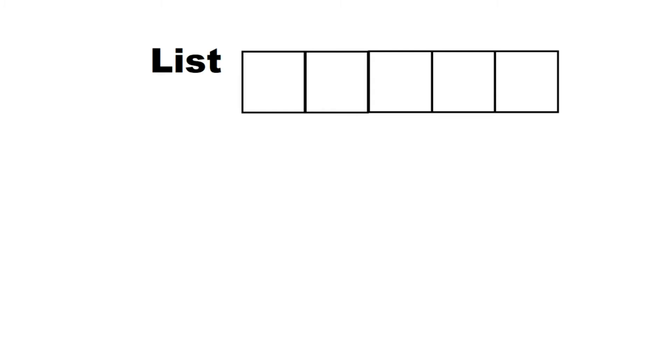This is a list. Each individual square is a cell. Each cell contains both a name and a value. The name will always be in order, starting with zero. However, the value can be anything.